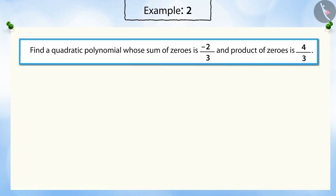Find a quadratic polynomial whose sum of zeros is -2/3 and product of zeros is 4/3. Here, the quadratic polynomial is ax² + bx + c.